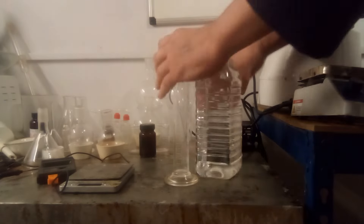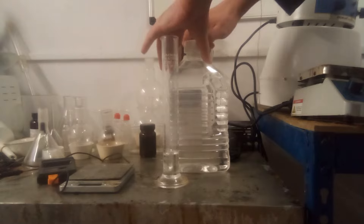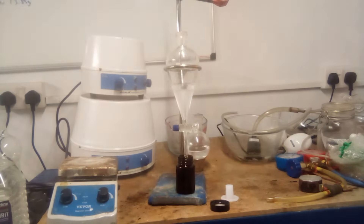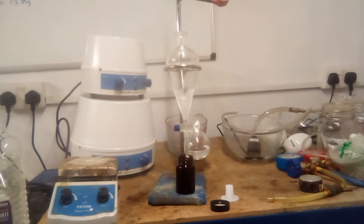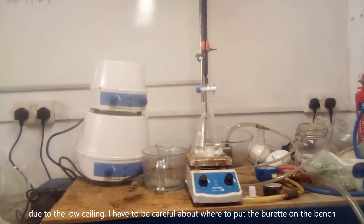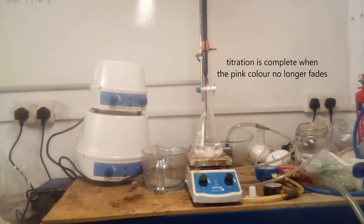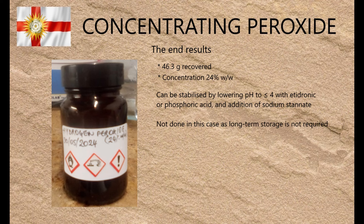To remove any remaining xylene, the distillation product was washed with 20 ml of low-odour white spirit and the two phases were separated using a separating funnel. The amount recovered was 46.3 grams. To work out the concentration of peroxide, a sample was dissolved in 7.5% sulfuric acid and titrated with potassium permanganate solution. The peroxide content was 24% by weight, which is about what you'd expect when a little over half the water is removed from a 12% solution.